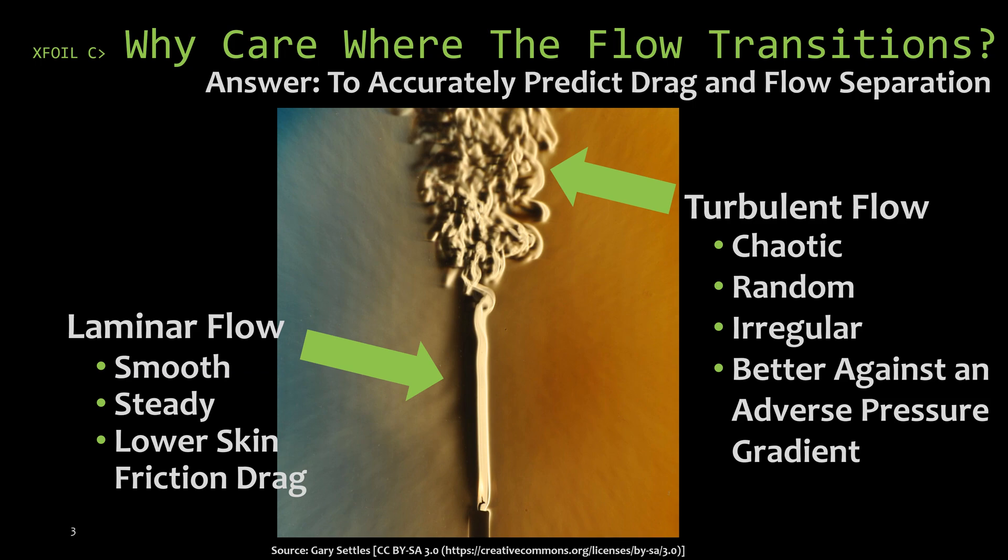So really there's a trade-off here between skin friction drag and pressure drag. Perhaps in a future video we'll explore this idea more in depth, talking about golf balls and why they put dimples on golf balls. So the reason we care where the flow is laminar, where it's turbulent, effectively where the flow transitions, is because we want to accurately predict both drag and flow separation.